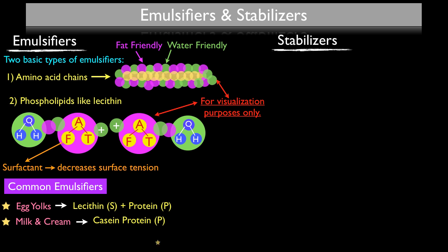Then you have mustard — the mucilage in the mustard seed coating is a very powerful surfactant. This is why you commonly see it called for in a vinaigrette recipe: not only does it add a nice flavor profile, but it works as an extremely powerful emulsifier to link the vinegar and the oil used in making a vinaigrette.